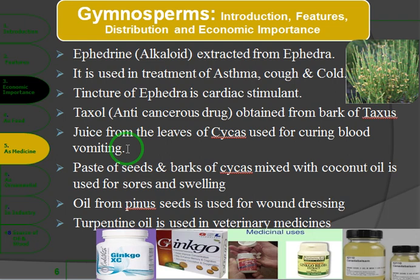Oil from pine seeds is used for wound dressing. Turpentine oil is also used in wound dressing. Terpene derived from pines is used in veterinary medicine for treating animals. It is also used in paint and varnish for oil and industrial purposes.